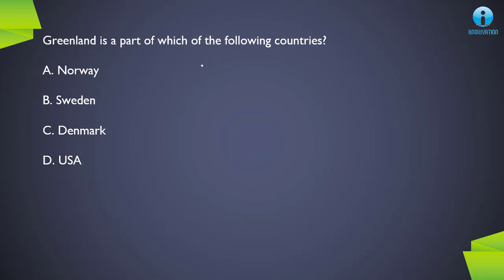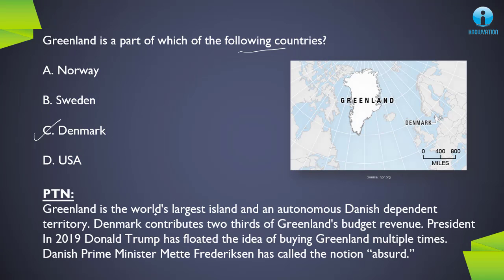Next question: Greenland is a part of which of the following countries? The correct answer is C, Denmark. Greenland is basically part of Denmark — it is the world's largest island and an autonomous Danish dependent territory. Denmark contributes two-thirds of Greenland's budget revenue. One important current affairs note: US President Donald Trump in 2019 floated the idea of buying Greenland multiple times due to its strategic importance in sea trade routes, but the Danish Prime Minister called this notion absurd and did not allow it.